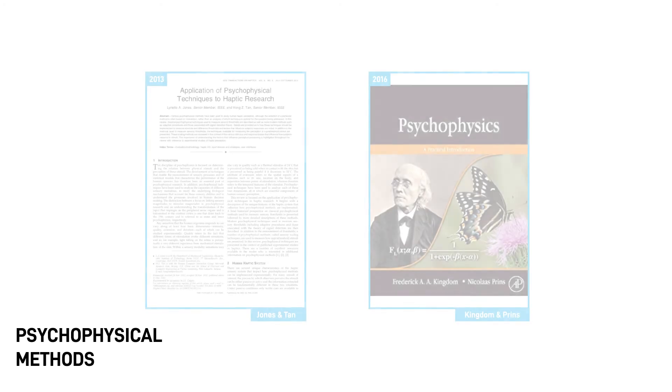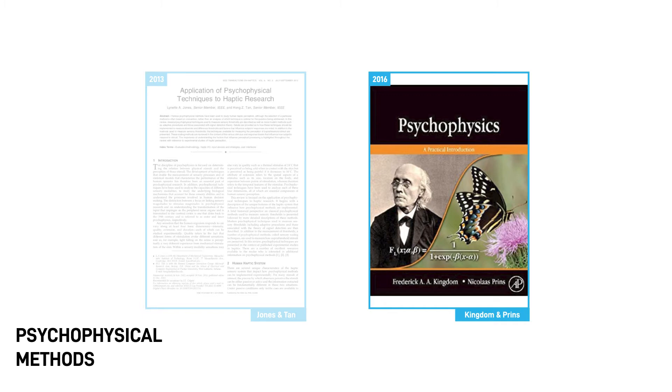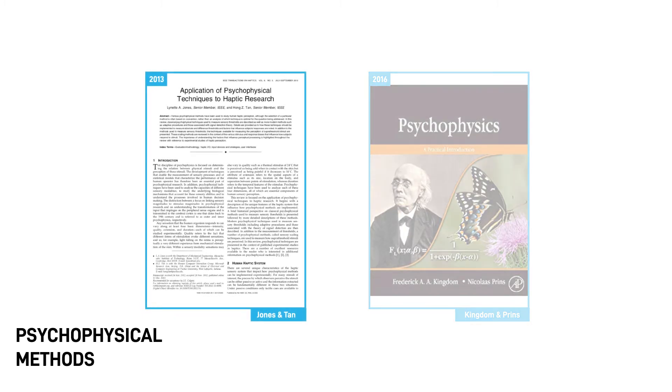Psychophysical methods are numerous. Choosing the right method depends on the scientific question at hand, the capabilities of the experimental apparatus, and fatigue experienced by the participants. Many reviews and textbooks about those psychophysical methods are available. A classical textbook is Psychophysics by Kingdom and Prins, that also includes an open-source MATLAB toolbox. Another influential review topic is the Psychophysical Methods for Haptics by Jones and Tan. Here we introduce three classical psychophysical procedures.